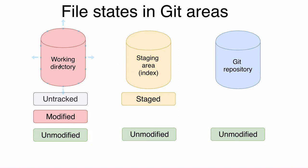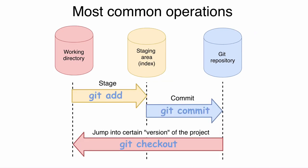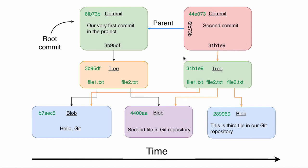That's how file states are distributed among different git areas. Now it should be clear what file states are, how they change, and what happens under the hood when you use git add and git commit. At the moment, the picture of our project has two commits — a root commit and a parent commit — with two trees pointing to different blobs: one tree points to two blobs and the other to three blobs. In the next section we will start using the git checkout command, and I will explain what head and branch are.